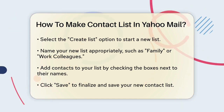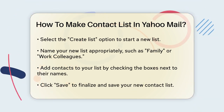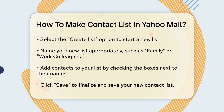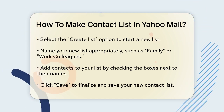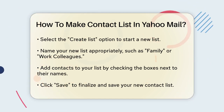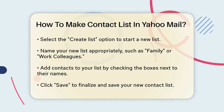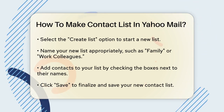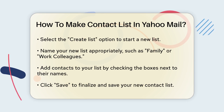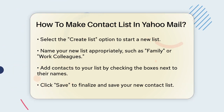Now it's time to add contacts to your list. You can do this by selecting the contacts you want to include from your existing contact list. Simply check the boxes next to the names of the people you want to add and they'll be included in your new list. Once you've added all the contacts you need, click Save to save the list.